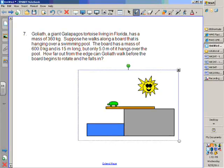Okay. So, what are we looking for? A distance. Definitely a distance, right? So we'll call that D of G, because the turtle's name is Goliath. Because he's a giant Galapagos tortoise.